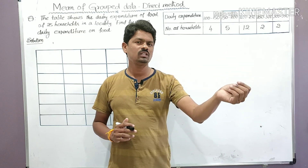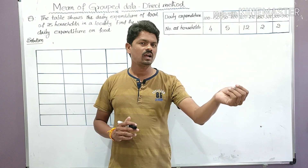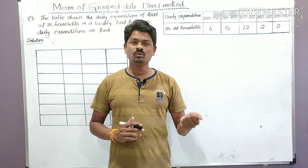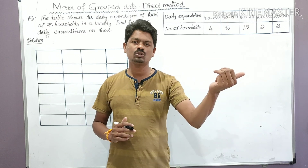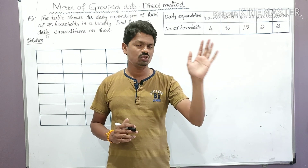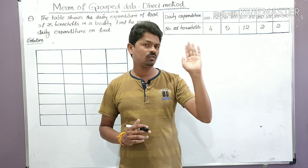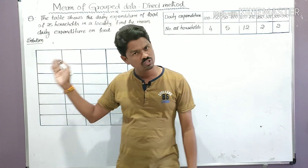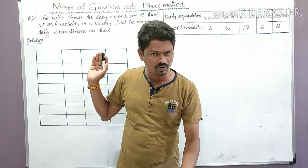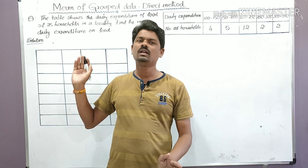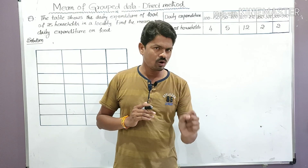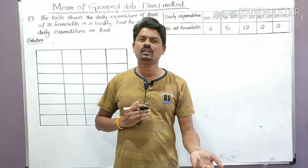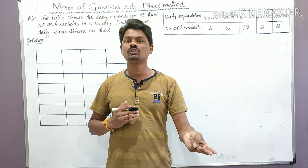Suppose there are 30 students in a class. If I say 'come, anyone,' there is a chance for any one of those 30 students to come. But if I mention a particular student's name, only that student has to come. Similarly, if the question mentions the name of the method, you must use that specific method. If it doesn't mention a method, you can use any one of the three.